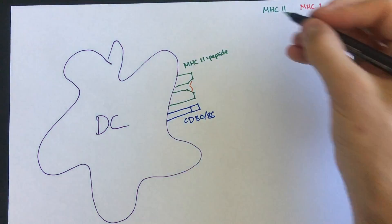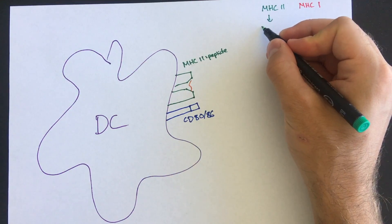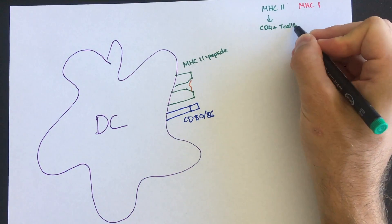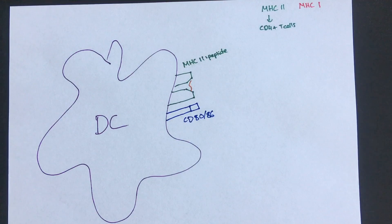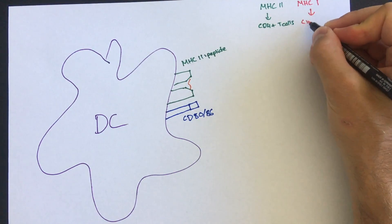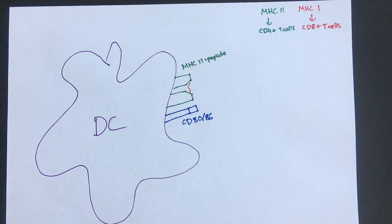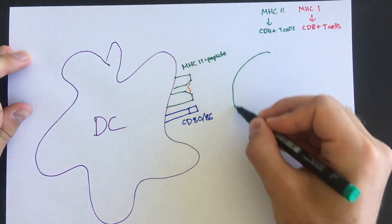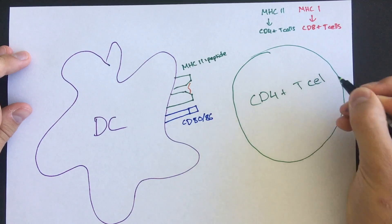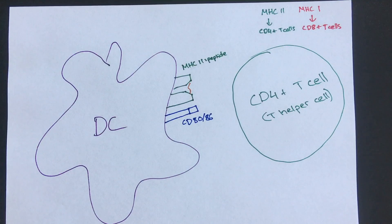There are two T cell types based on which accessory molecule they each express. T cells that express CD4 are called T helper cells, and these respond specifically to MHC class 2. T cells that express CD8 are called cytotoxic T cells and respond to MHC class 1. CD4 T cells are thought of as helper cells because they assist many other immune cell types, particularly via cytokine release, and therefore indirectly eliminate pathogens.